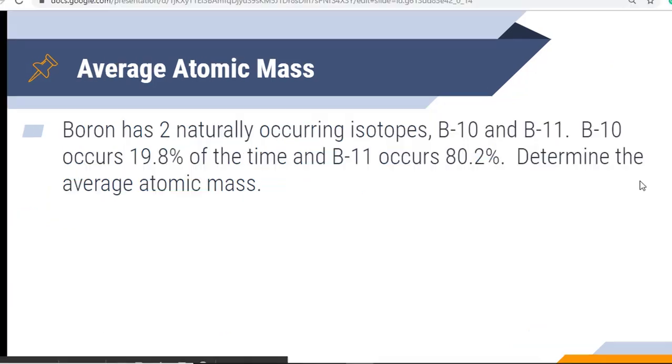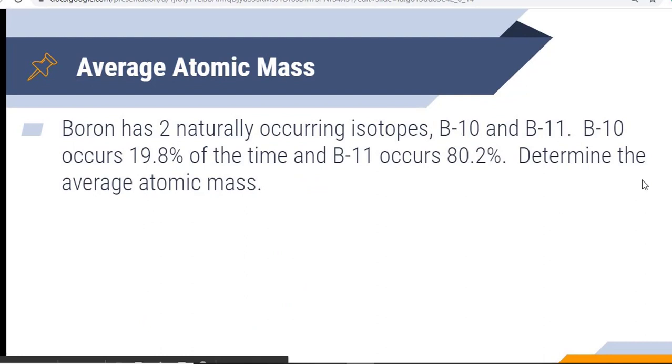Let's do a practice problem. Boron has two naturally occurring isotopes, B-10 and B-11. B-10 occurs 19.8 percent of the time, and B-11 occurs 80.2 percent. Determine the average atomic mass. Well, remember, all we need to do is we just need to take the mass, okay, so we have 10 and 11, and again, sometimes you'll see these in a little more detail. 10 occurs 19.8 percent of the time, and 11 occurs 80.2 percent of the time, so we're just going to take the mass and multiply it by the abundance. Remember that these need to be in decimal form.